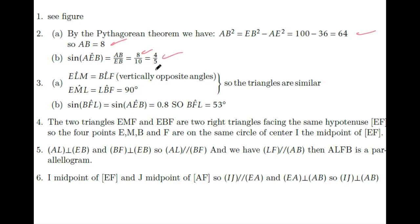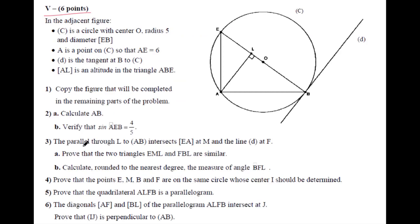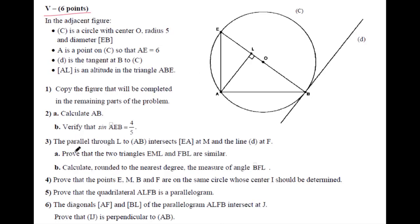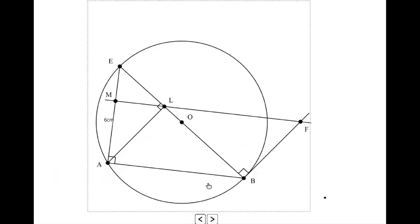The parallel L to AB intersects EA at M and the line D at F. We have to prove that the triangles EML and FBL are similar.